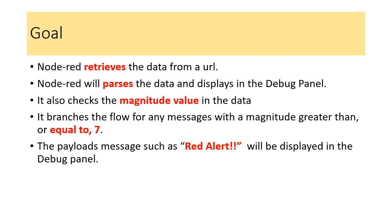Our goal is to retrieve data from a specified URL through Node-RED, pass the data, and display it in the debug panel. In this example, we are going to check the magnitude value in the dataset and branch a new message when the magnitude is greater than or equal to 7, sending a red alert message displayed in the debug panel.